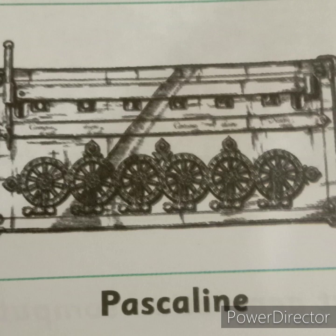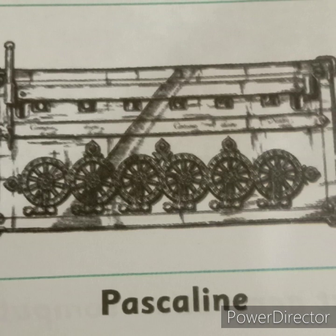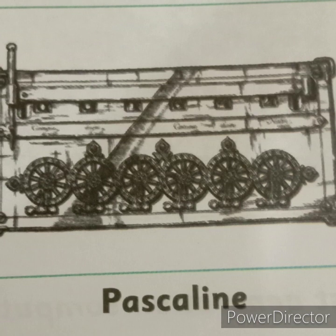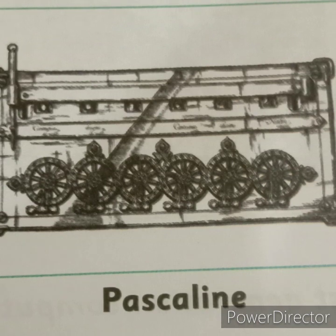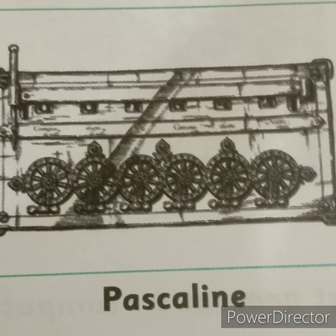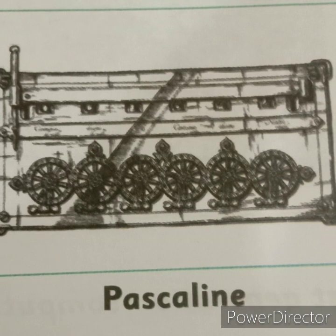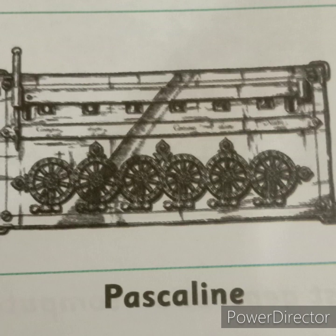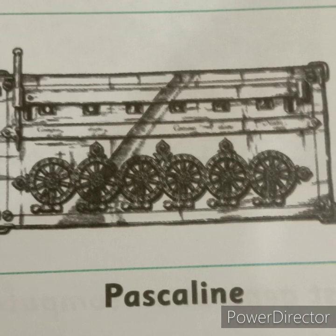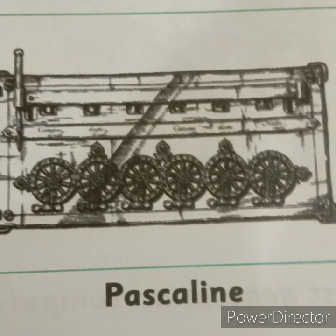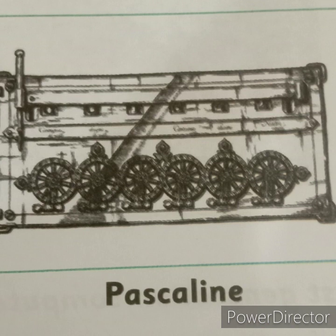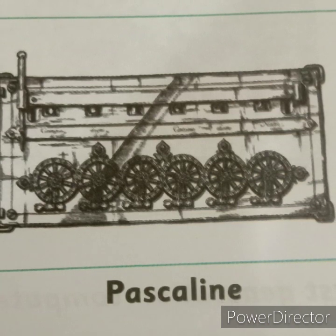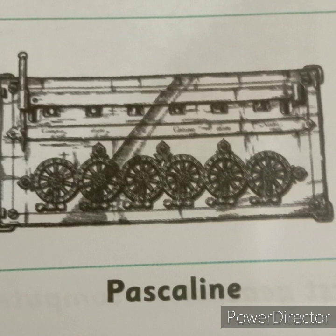Second one is Pascal Lyon. Pascal Lyon was the first mathematical calculating machine, invented in 1642. Blaise Pascal, a French mathematician, invented Pascal Lyon when he was just 19 years old. This machine, with its gears and wheels, could perform additions and subtractions.